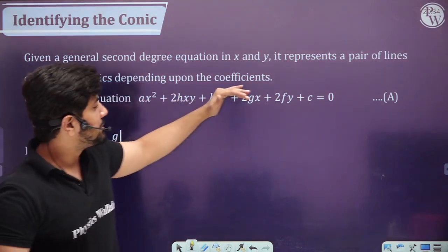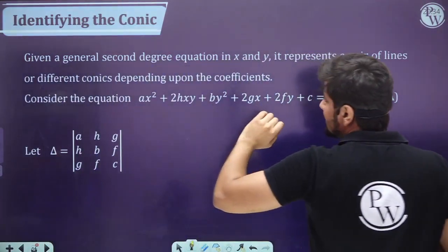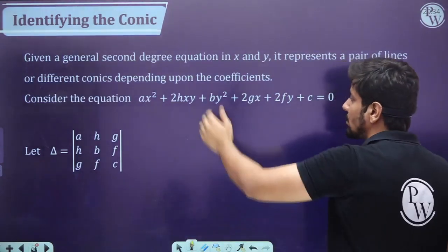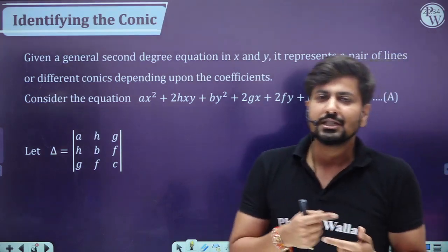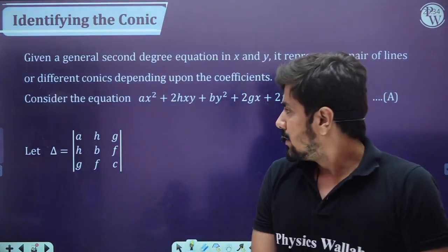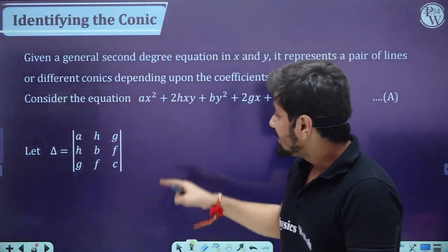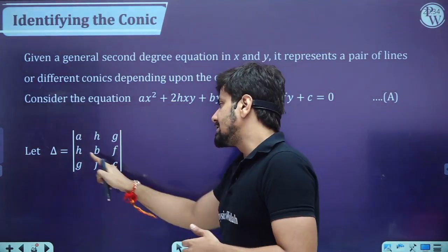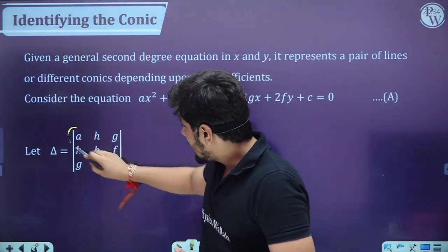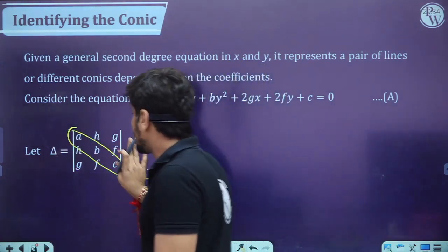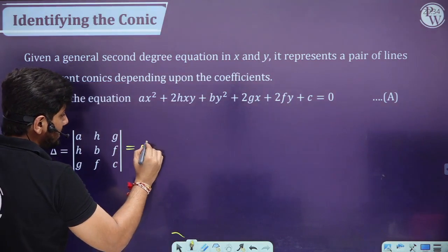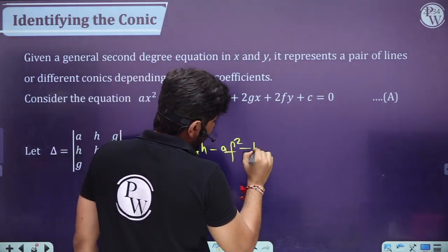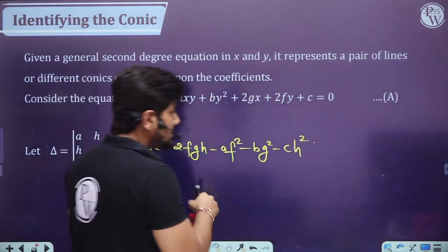Given a general second-degree equation in x and y, it represents a pair of lines or different conics depending upon the coefficients. We use the determinant delta: Δ = abc + 2fgh − af² − bg² − ch², where a, b, c are on the diagonal and h, g, f are the off-diagonal elements. If delta = 0, the equation represents a pair of straight lines.